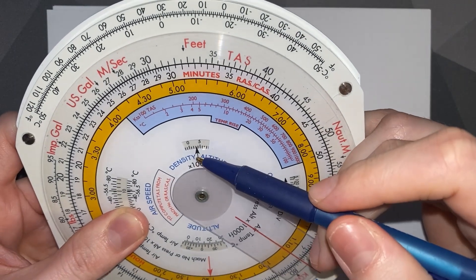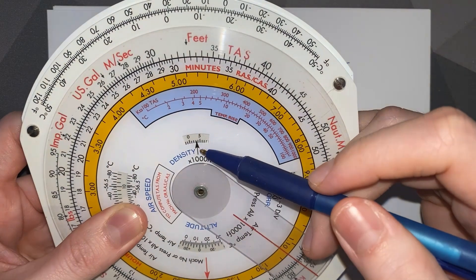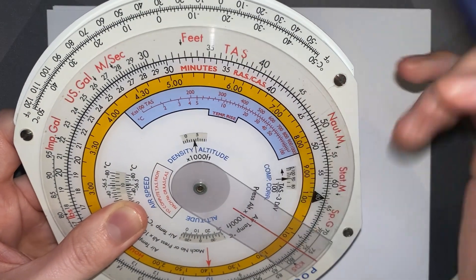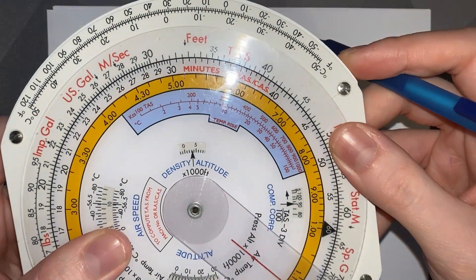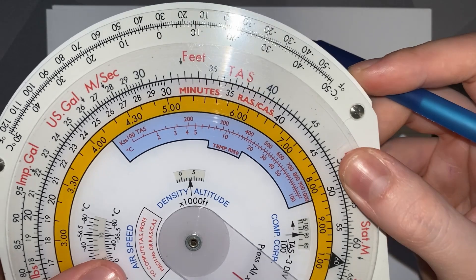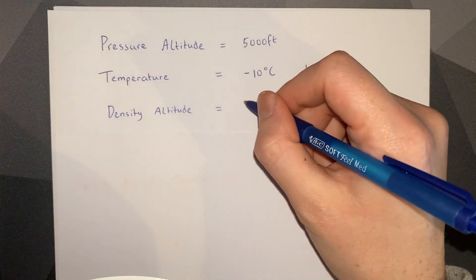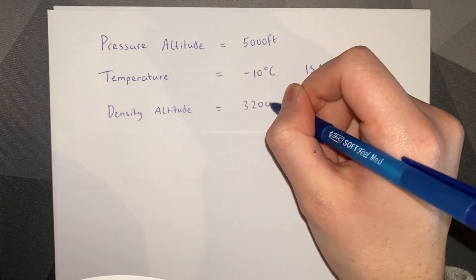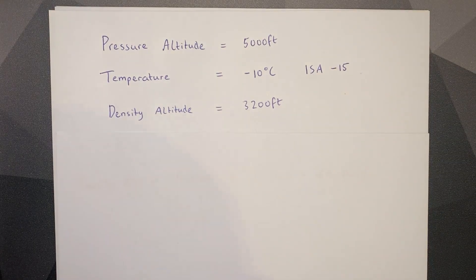It's slightly past 3,000 but not quite 3,500. A good estimate would be 3,200 feet. So our density altitude is 3,200 feet.